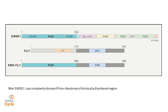FLI1 is an ETS-family DNA-binding transcription factor with a DNA-binding domain on the C-terminus and a regulation domain on the N-terminus. As a result of the translocation, what you have is this low-complexity domain of EWS fused to the DNA-binding domain of FLI1.